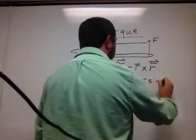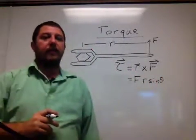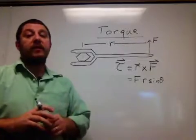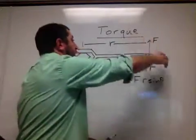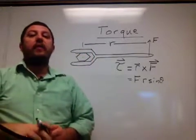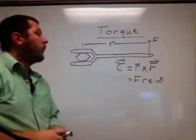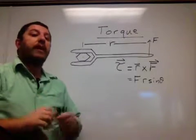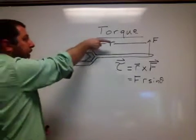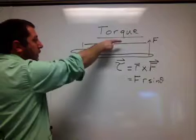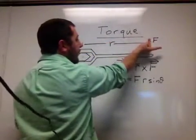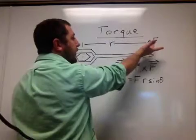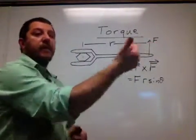Torque is a vector and has direction. The bolt will start rotating about an axis, so we need to define that direction. We use what's called the right-hand rule: point your forefinger in the direction of the lever arm R, point your middle finger in the direction of the force, and the direction your thumb naturally points is the direction of the torque.